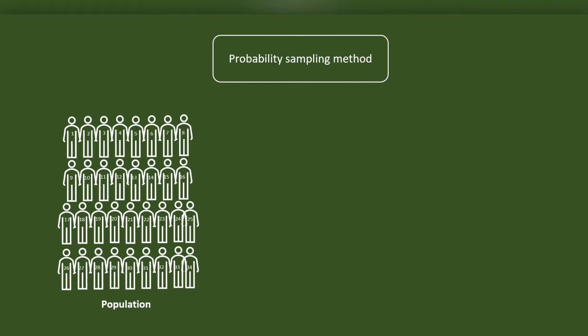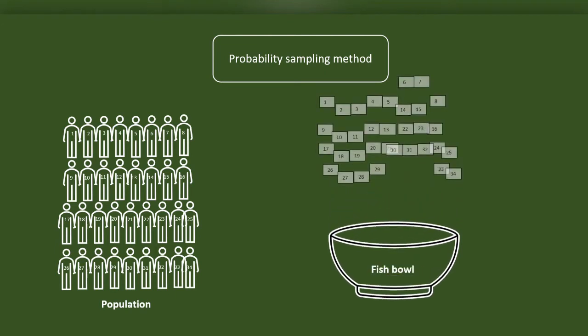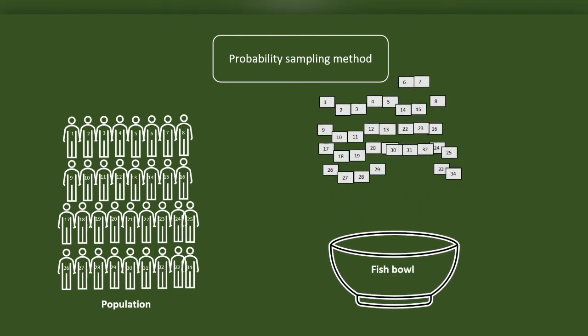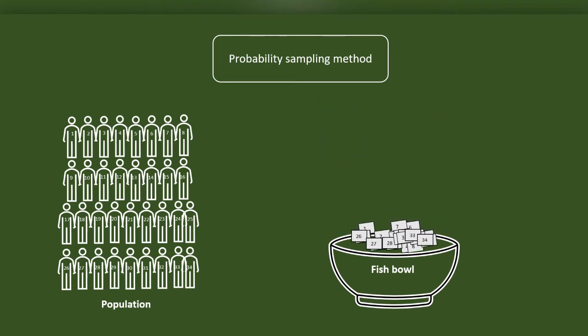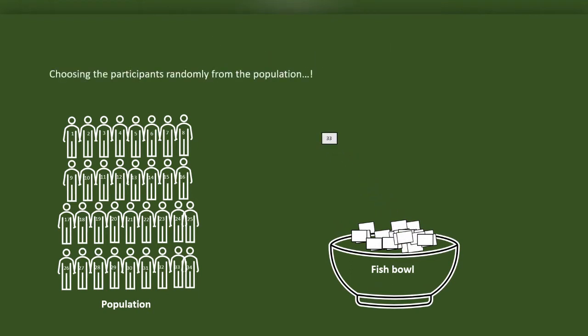As a first step, we can make a list of the participants. Each participant can be identified with an ID. First we prepare a set of lots with an ID in each. After preparing it, we will fold the lots and deposit them in a fish bowl. Now we can choose one lot after the other from the fish bowl.